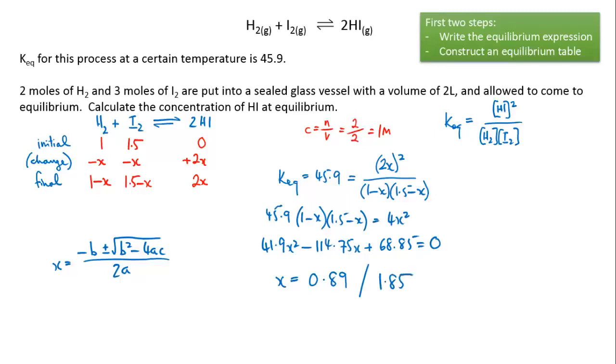Now you go back to your equilibrium table and you look at what your final equilibrium concentrations were going to be. Hydrogen was going to be one mole per litre minus x. So it actually makes no physical sense for x to be 1.85 because you can't use more than you started with. We had one mole per litre to start with and if x is 1.85 then we've used more than we had.